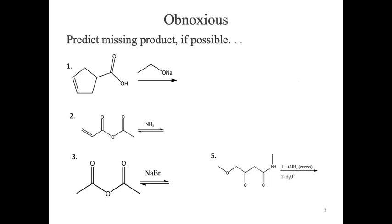Let's do question one. First, we need to identify our most reactive thing. What's the most reactive thing in one? We've got a suggestion for the carbonyl. We also have an oxygen-sodium bond, which is an ionic bond — meaning we have a negative oxygen. There's also another pi bond, and there's a hydrogen. Anybody see how this could get challenging?